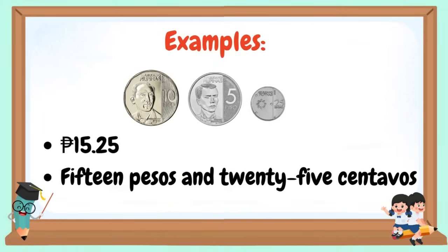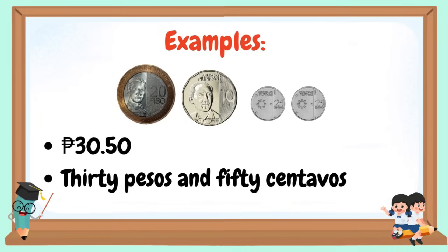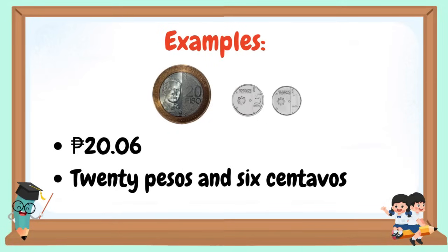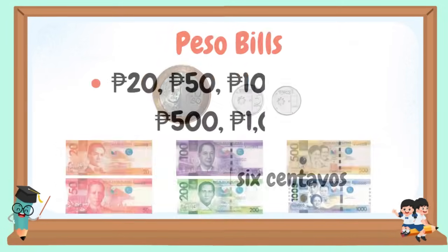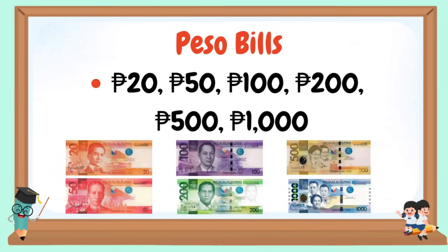Examples: This is 15 pesos and 25 centavos. This is 30 pesos and 50 centavos. This is 20 pesos and 6 centavos.